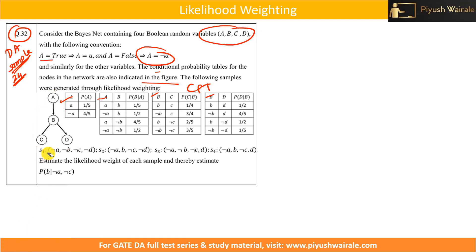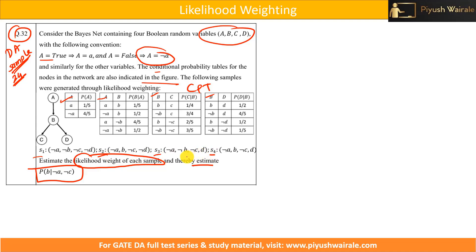Now we have four samples here: S1, S2, S3, S4. What we need to do is find out the likelihood weight for each sample, and thereby estimate this particular probability. So we need to find the weight corresponding to each sample and thereby estimate negation of A, negation of C — that is, both are false. Now, what are the evidence variables here? Negation of A and negation of C are the evidence.